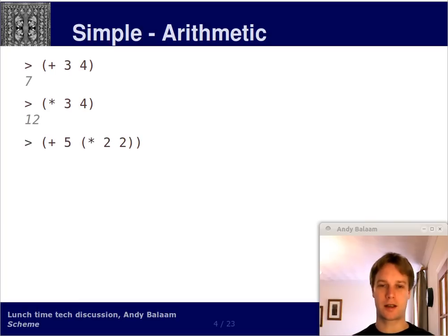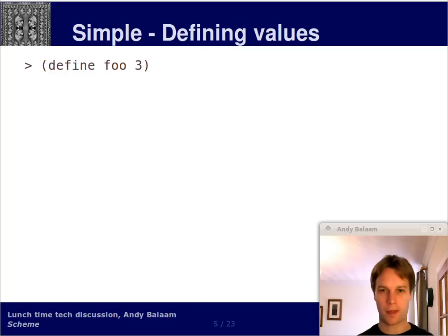We can also nest these things. So here we've got a function called plus. We're giving it number five as its first argument. And the second argument is the return value of another function, which is the times function. So we're multiplying two by two and putting that answer into that place in the plus function. So we've got five plus four, which makes nine.